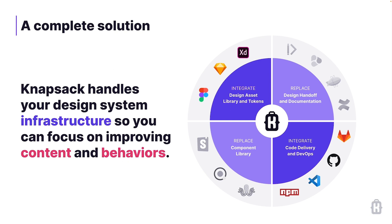We do this by integrating closely with the design source of truth, where designers are working on the system and with the system to create UIs. As well as with the engineering, coding delivery, and operations systems — that means the underlying Git repos where the system is actually managed, the distribution tools like NPM for how that system is integrated into the digital products your customers use, and the development experiences that developers are in when implementing those products or working on the system itself. We also tend to replace tools that aren't as helpful in creating an end-to-end structure — typically library tools or documentation-only sites that are aimed at a single function and not the cross-functional team.